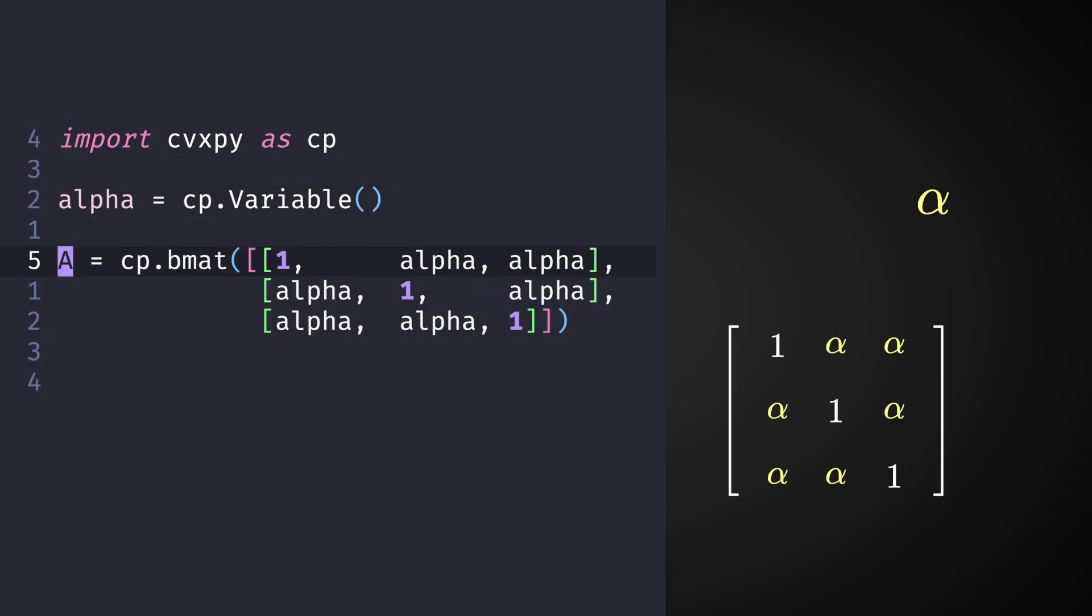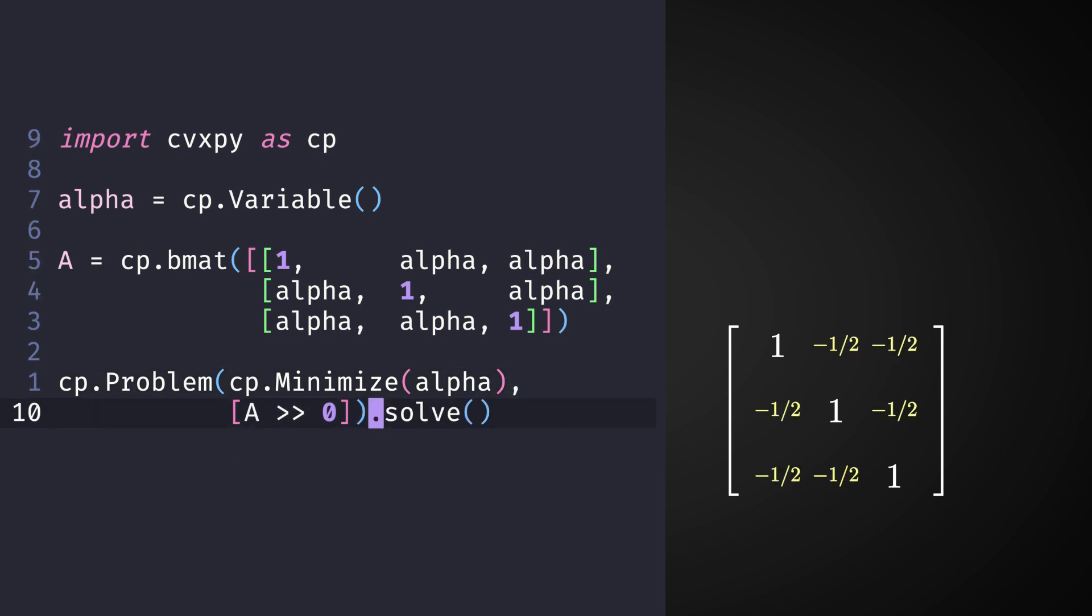Here is how you do it in Python, for example, using the popular package cvxpy. First, declare an unknown variable alpha and construct the matrix that you want to make positive semi-definite, and let's call it A. Then, tell cvxpy that we want to minimize alpha while keeping the matrix A positive semi-definite. And finally, and most importantly, call the solve method to get the optimal solution.